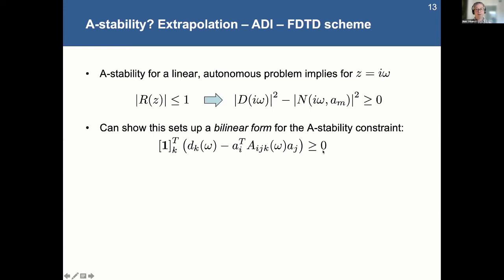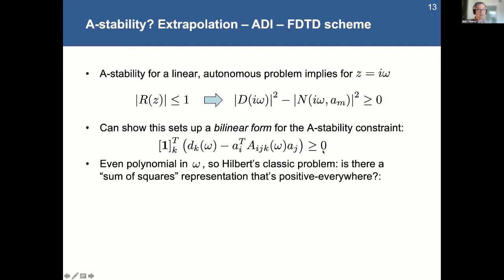And boy, did I go down a rat hole here. This was actually a version of Hilbert's classic problem called the sum of squares representation of a polynomial. I don't know if any of you know that. Luckily, it's easy in 1D, which is just the one dimension of omega. If I made it 2D in the sense of into the complex plane, I think that it's an open question as to how one would solve this for higher D. It's an NP-hard problem in that case, I believe.